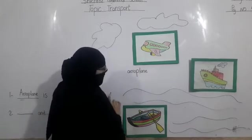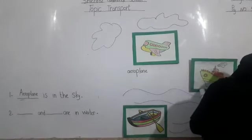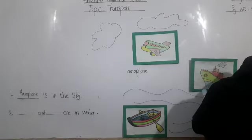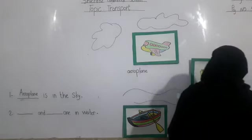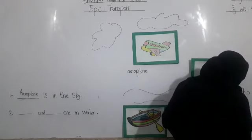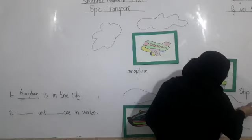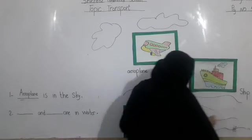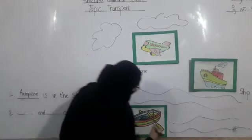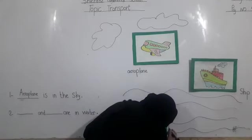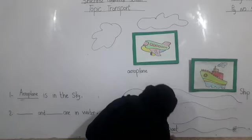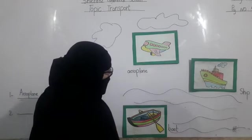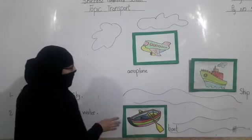And this is ship. Ship moves in water. And this is boat. Boat also moves in water. These are kinds of transport.